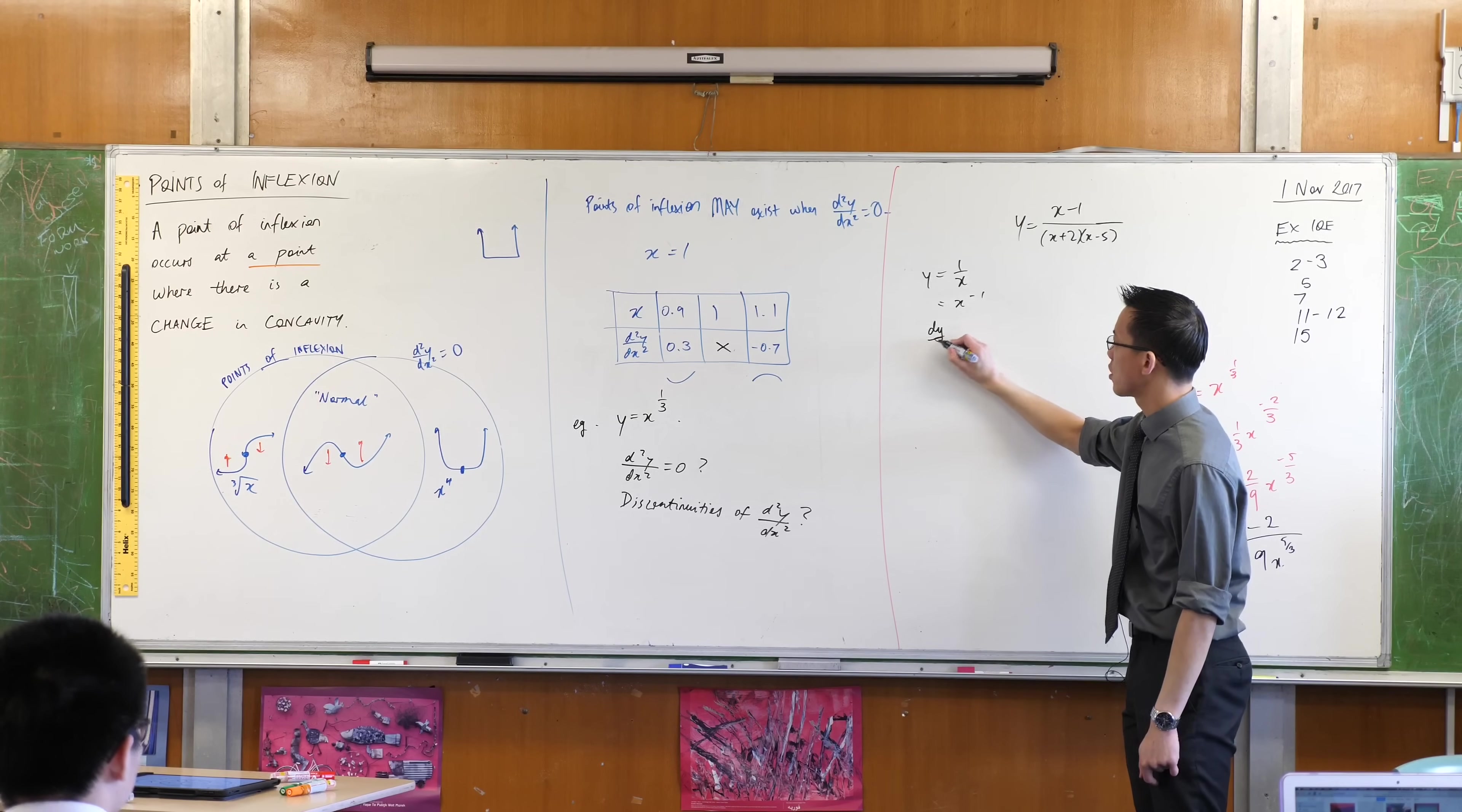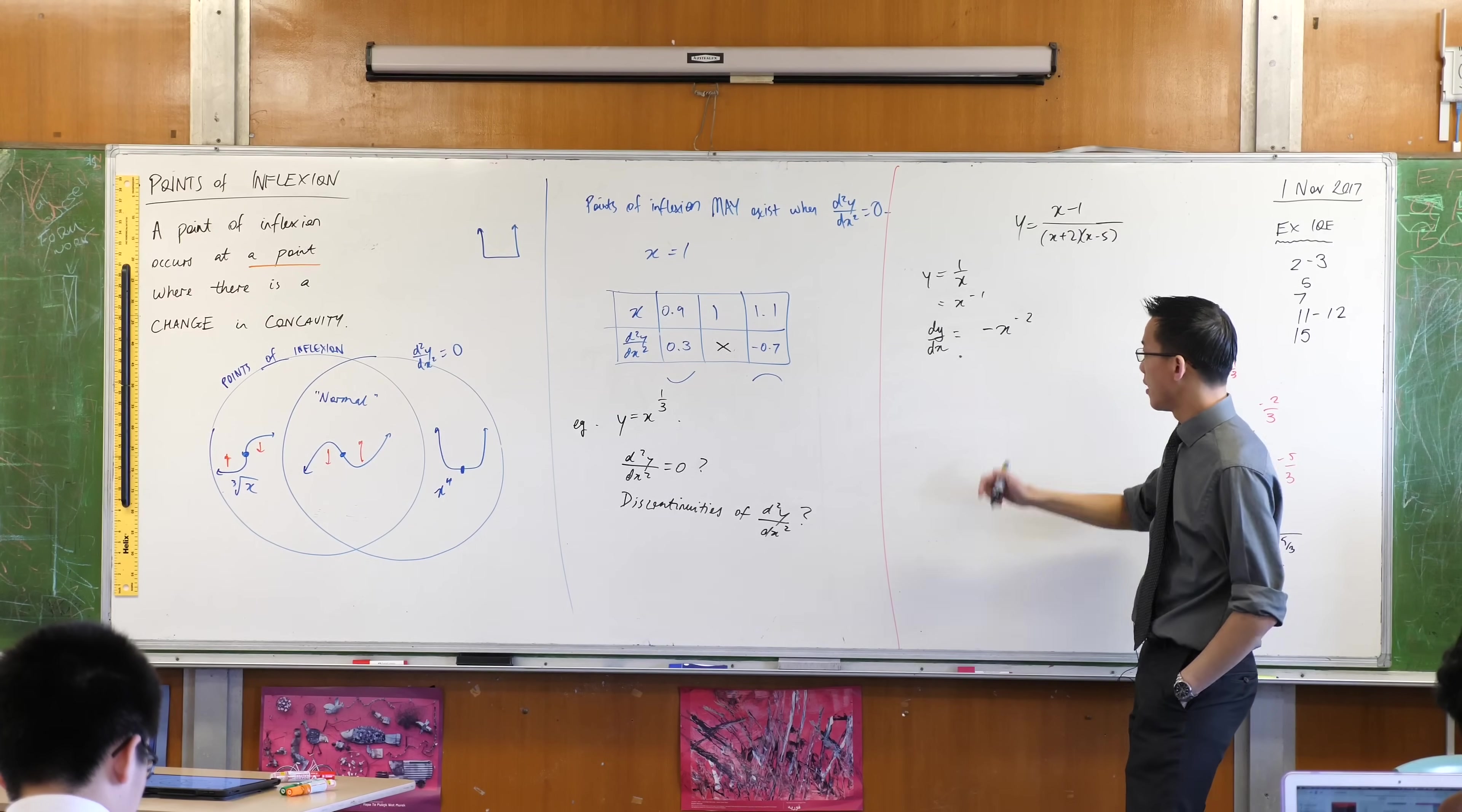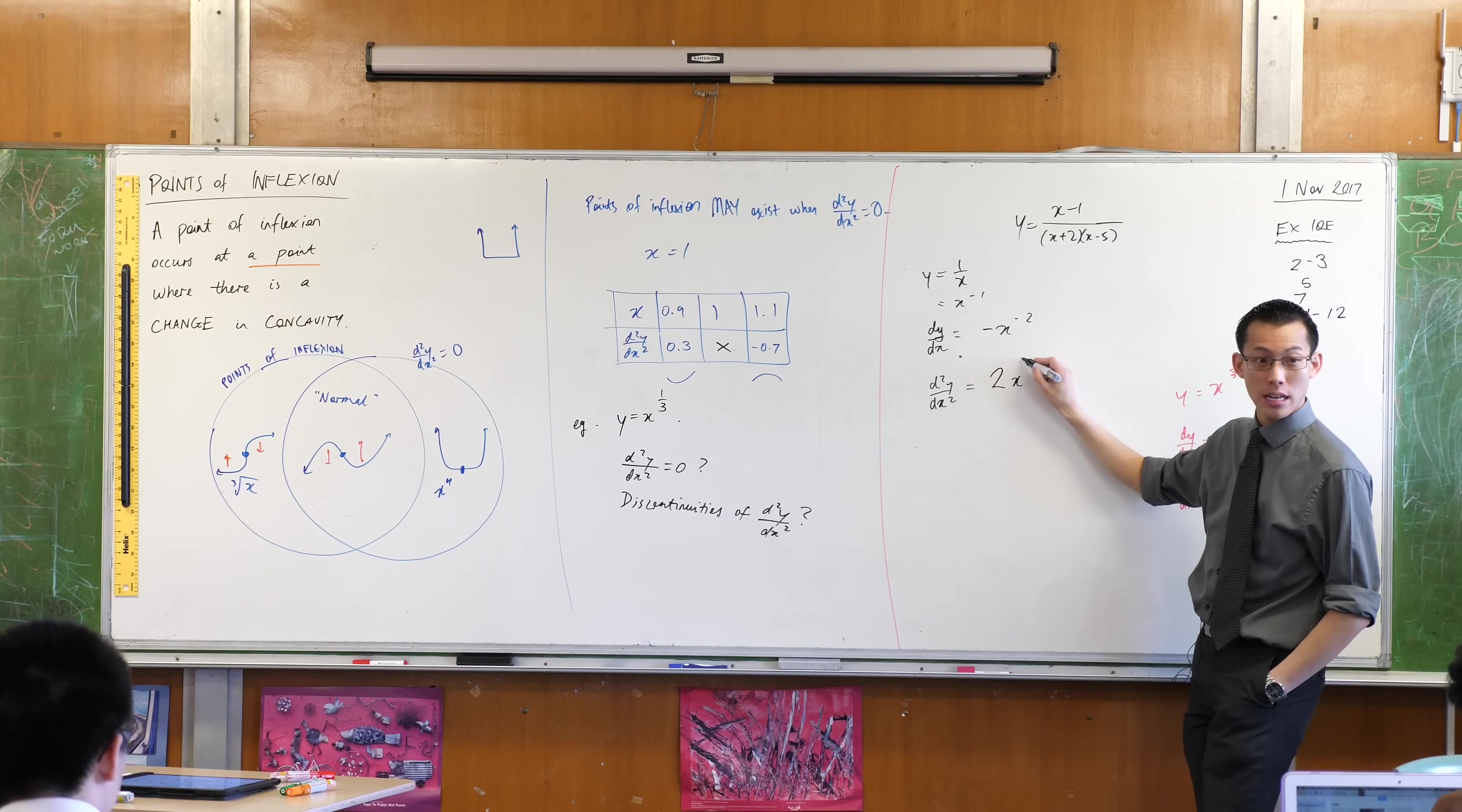So therefore, the first derivative is going to be equal to what? Minus x to the minus 2. I'm interested in points of inflection, so I'm going to go to the next derivative, which in this case is going to be 2x to the negative 3.